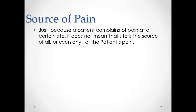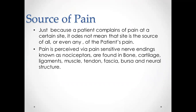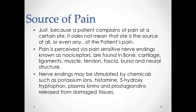Pain is perceived by pain-sensitive nerve endings that are present extensively throughout the body. These nerve endings, known as nociceptor nerve endings, are found within bone, cartilage, ligaments, muscles, tendons, fascia, bursa, and neural structures. Stimulation of these nociceptor nerve endings will result in the individual perceiving pain. Nerve endings may be stimulated by chemicals such as potassium, histamine, 5-hydroxytryptamine, plasma kinase, and prostaglandin released from damaged tissues.